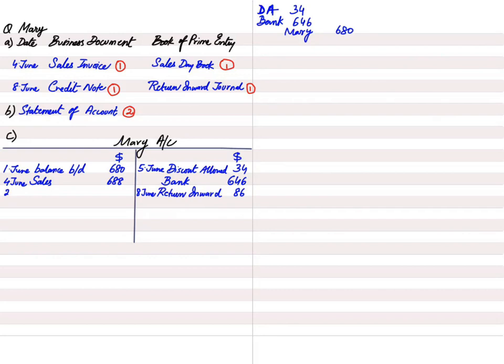The next transaction: Kim sold further goods to Mary for list price 300. We are Kim, selling goods to a customer — entry is debit customer, credit sales. But 300 is the list price, so we deduct trade discount. Applying 14% to 300 gives 42; deducting that leaves 258. Trade discount is never recorded in the books.